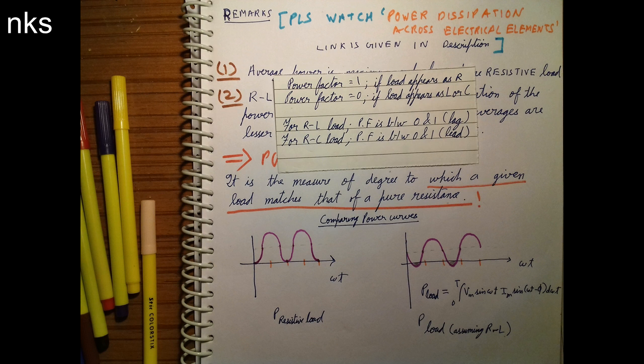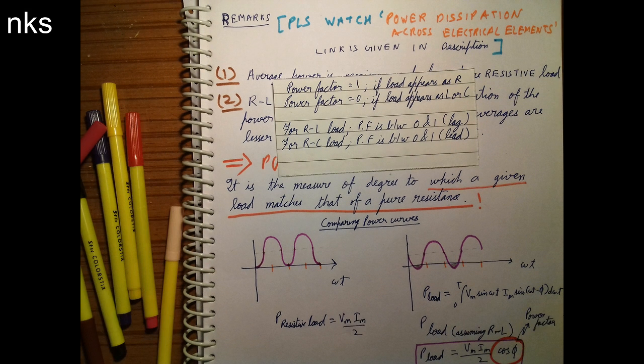So what comes out to be the P load is Vm Im by 2 cos φ on solving the above expression. And for the P resistive load, we know that P resistive load is Vm Im by 2. So what is the power factor?